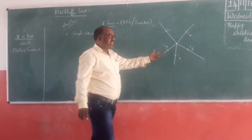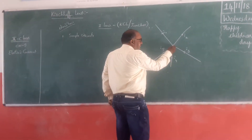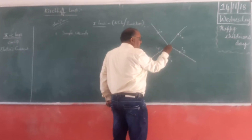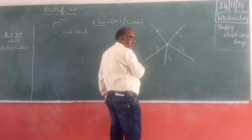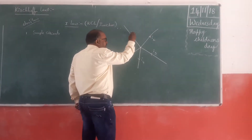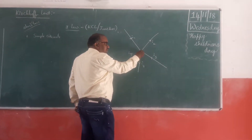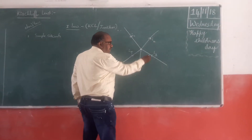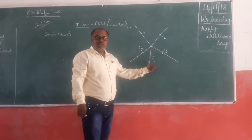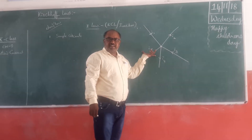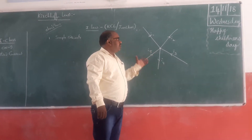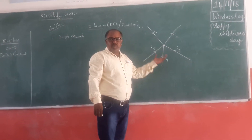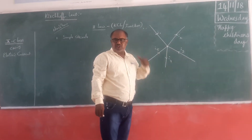What exactly does this Junction Law say? Here is a junction where different wires are in contact at a single point — this point is called a junction. In the first wire, current is coming towards the junction. In the second wire, current is leaving the junction. The third wire has current coming towards the junction, the fourth wire has current leaving, and the fifth wire has current coming towards the junction.